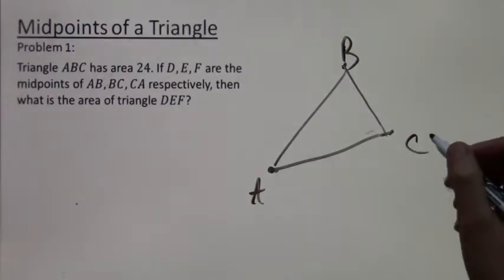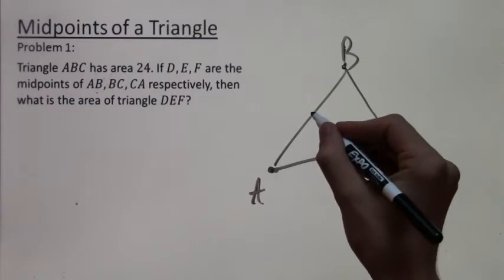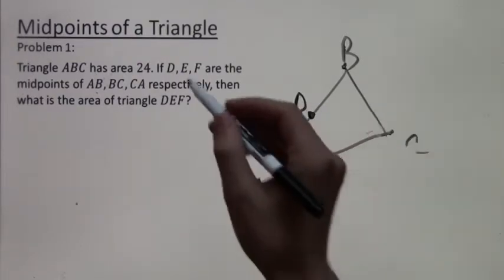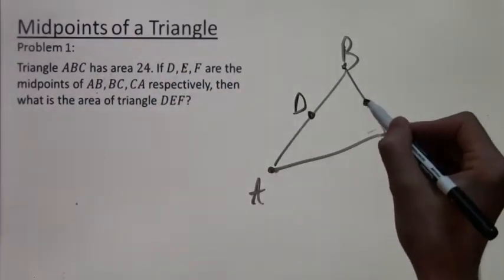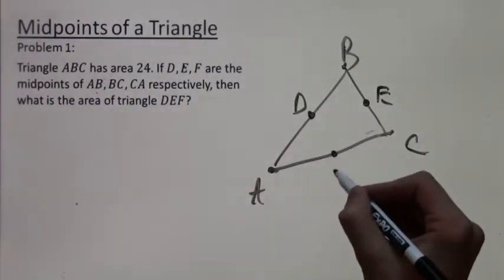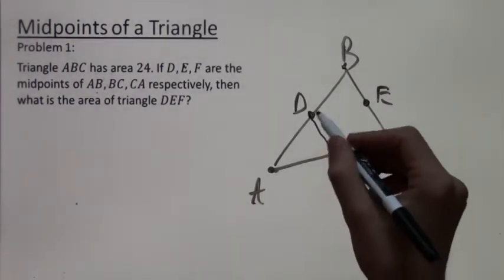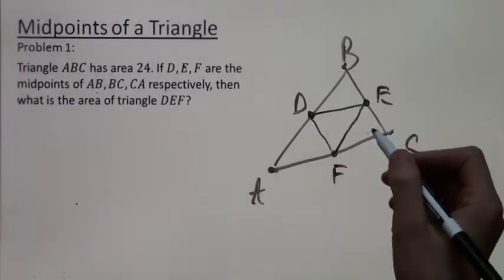And then we have the midpoints D, E, F. D is for AB. E is for BC. And F is the midpoint of CA. So here I've labeled the midpoint. And what we really want is the area of this triangle that I just drew.